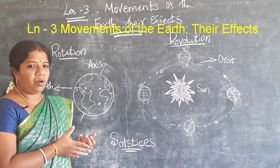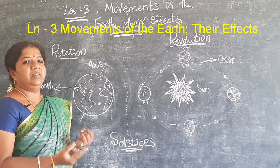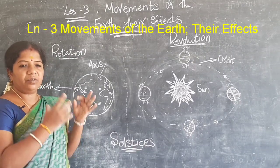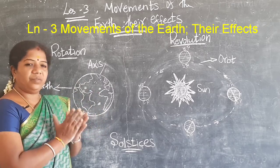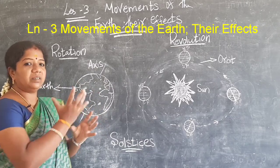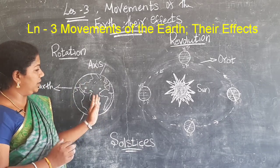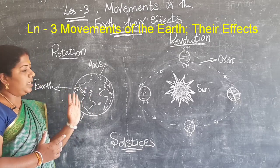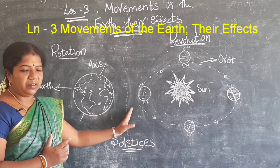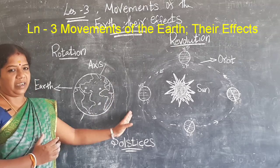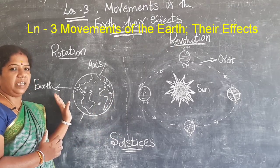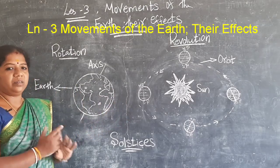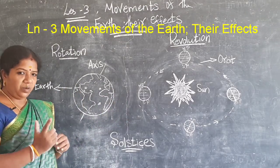In rotation, the time taken is 24 hours and it causes day and night. If the part of the earth faces the sun, it is daytime. The other part that is far away from the sun experiences night. Likewise, the rotation takes place once in one day.